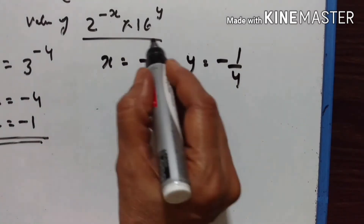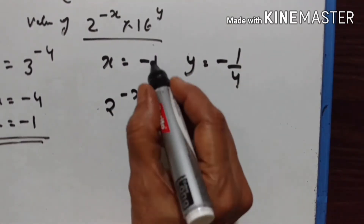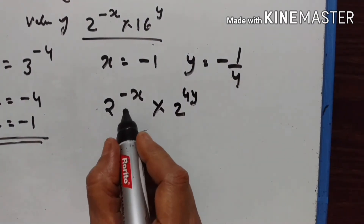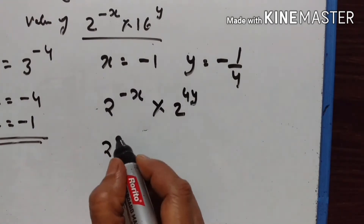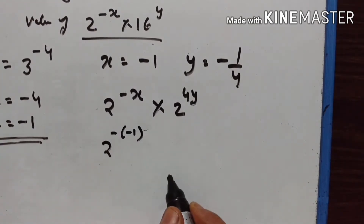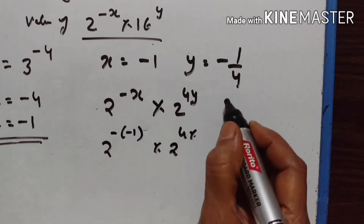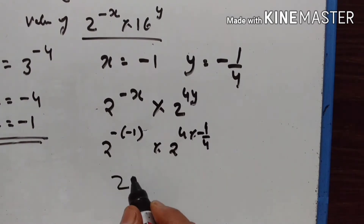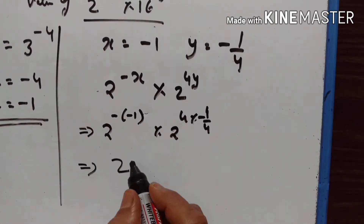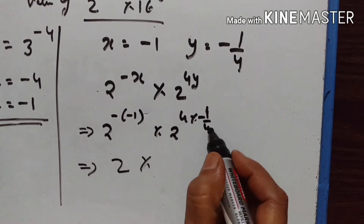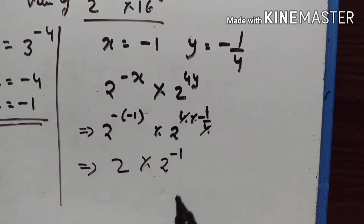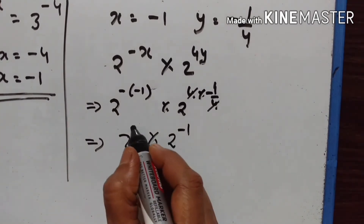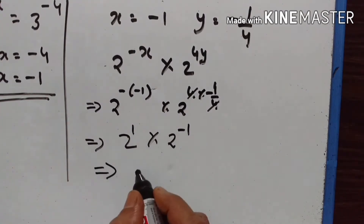We have to find the value of 2 raised to the power of minus x into 16, which equals 2 raised to the power of 4 into y. So 2 raised to the power of minus x becomes 2 raised to the power of plus 1, and 2 raised to the power of 4 into minus 1 upon 4 becomes 2 raised to the power of minus 1. Adding the powers: 1 minus 1 equals 0. Therefore 2 raised to the power of 0 is equal to 1.